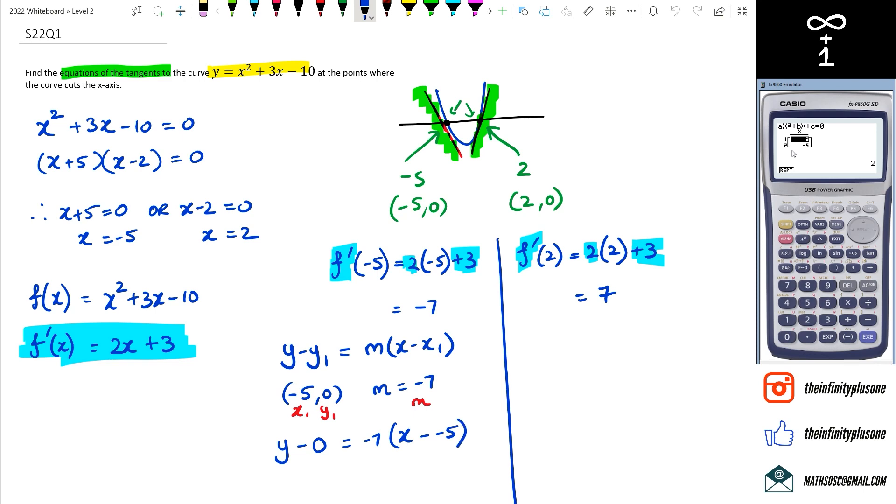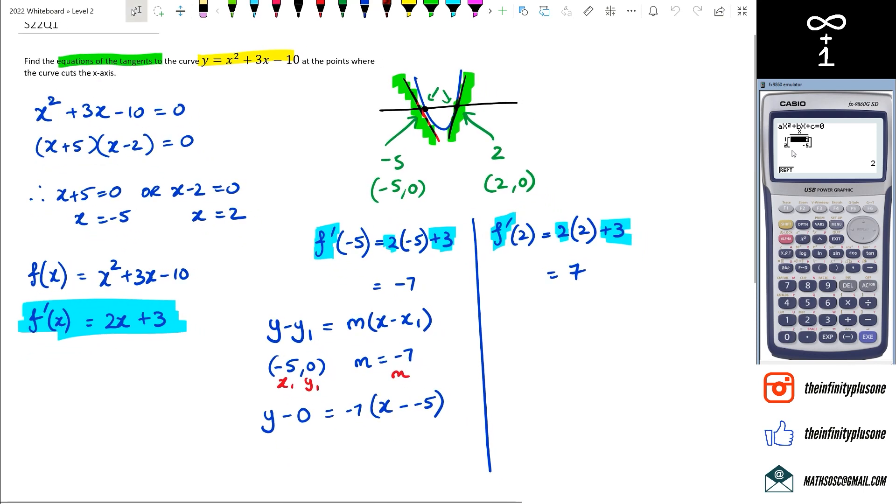So we've got y is equal to negative 7x plus 5, and then expanding it out, we're going to get negative 7x minus 35. So that's my first equation of the tangent.